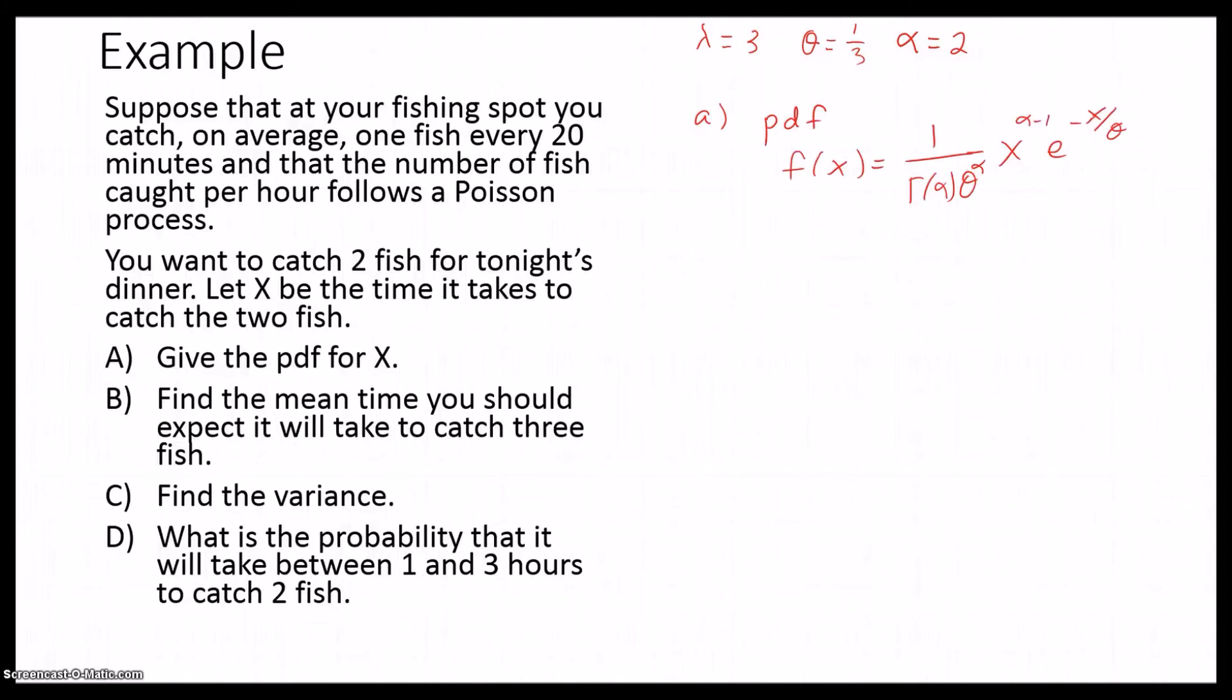Now, if we want to find our probability density function, we take our formula and we substitute in 1/3 for θ and 2 for α. And if we simplify, that gives us 9x e^(-3x). And that is our probability density function for X.